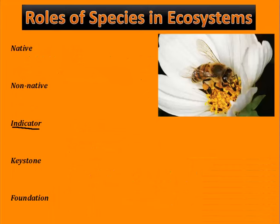A keystone species is a species whose roles have a large effect on the types and abundance of other species in an ecosystem. They usually exist in really small numbers in their ecosystems, but the effects they have are usually a lot larger than their small numbers would suggest. Because of their smaller numbers, keystone species are in fact more vulnerable to extinction than other species are.